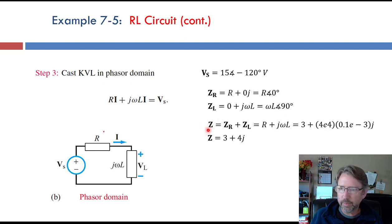So the total impedance, because these are in series, we can add them together. So it's R plus j omega L. So we get a real part from the resistor and an imaginary part from the inductor. And we get 3 plus 4j for the total impedance of these two elements.